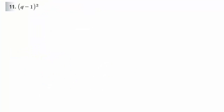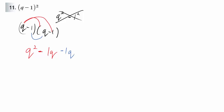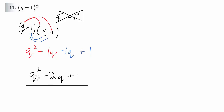For number 11, you want to be careful. The temptation might be to distribute the second power and just think q squared minus 1 squared. But this would be wrong. When you're squaring the binomial, what you're basically doing is writing that binomial twice. Distribute the q — you get q squared minus 1q. Then the blue ones give you minus 1q, and then negative 1 times negative 1 is positive 1. Combine those like terms and you get q squared minus 2q plus 1.